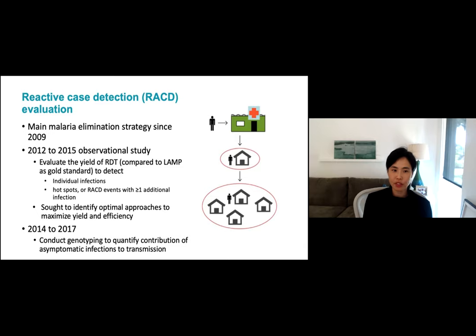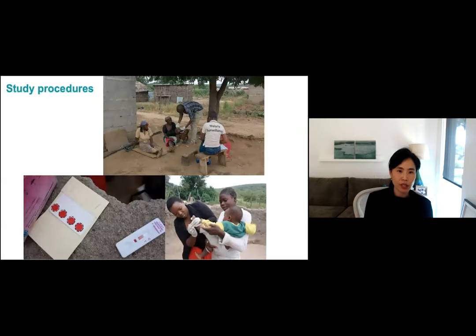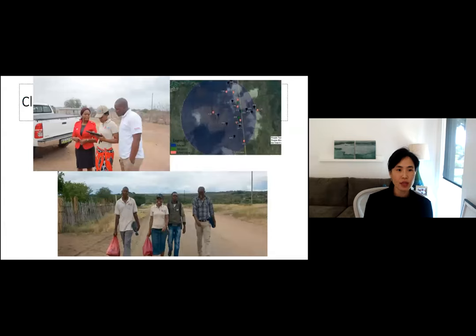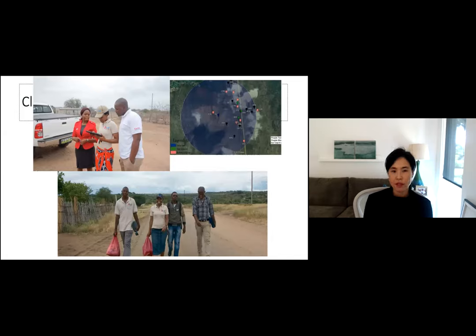We also utilized some samples to do genotyping work to measure transmission and understand the contribution of different types of infections — asymptomatic versus imported versus local infections. In the field, they would do rapid testing, and we would additionally get a dry blood spot to run PCR or LAMP. We also had pre-downloaded Google Maps images so teams could see how many households were in the radius, and supervisors could use this to monitor how thorough the team was.